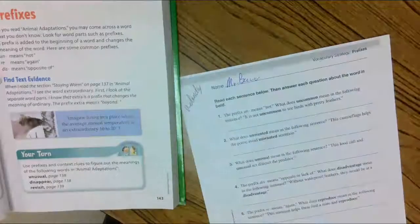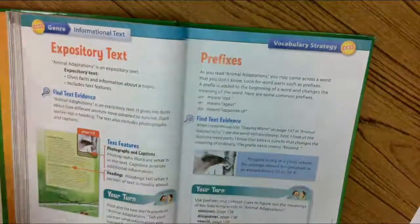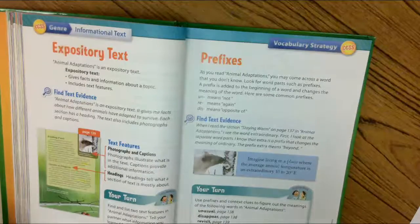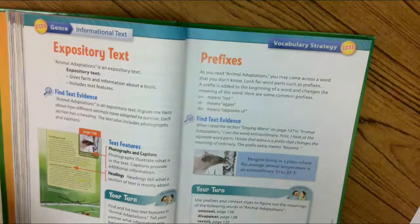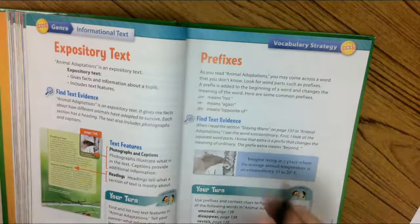Let's start with our name: Prefixes. As you reread Animal Adaptations, you may come across a word that you do not know. Look for the word part, such as a prefix. A prefix is added to the beginning.